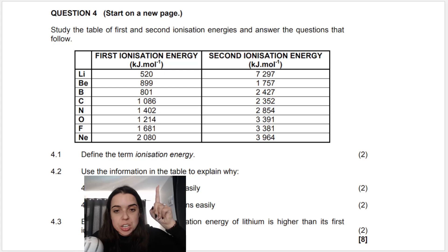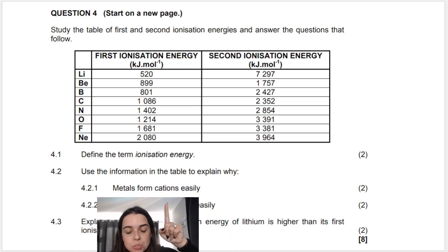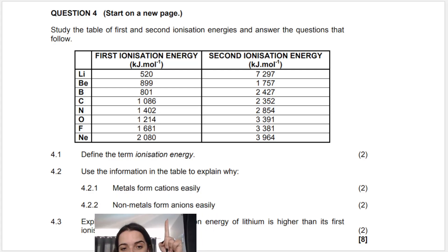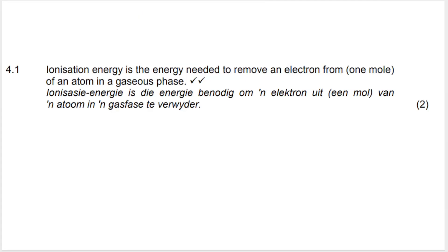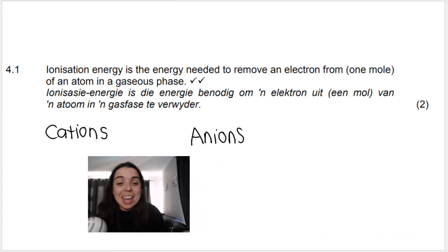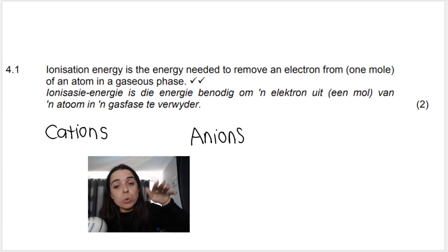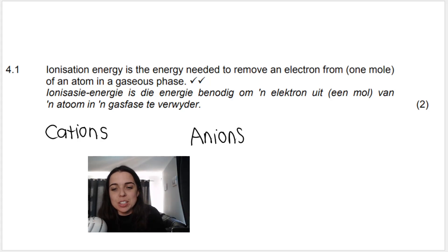Question 4.2 says: use the information in the table to explain why metals form cations easily and non-metals form anions easily. Before we get into using the table, I want to remind you what a cation and an anion are. Cations are positive. Anions are negative. The way I remember this: cations sounds like cats, cats have paws, cats are positive — cations are positive ions.